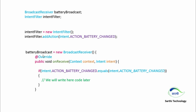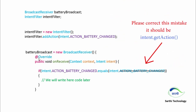The other object is the broadcast receiver, called battery broadcast. So battery broadcast equal to new broadcast receiver, and here we override the on receive method. Inside on receive we will create an if condition: if intent dot action battery change dot equals this intent dot action battery change, then we will write the code here. We will write that code in the next video.